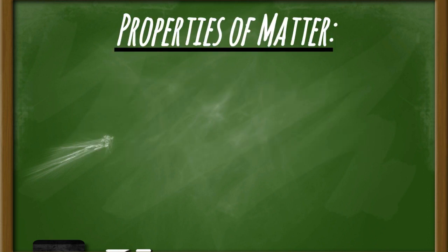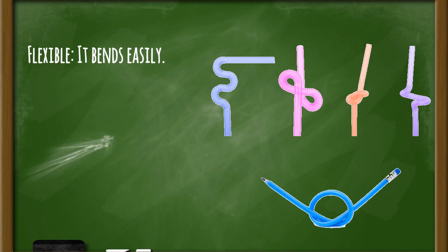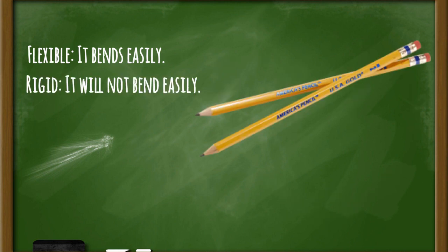When describing different types of natural materials and resources, we want to use properties of matter so we can identify and classify objects into categories. Our first vocabulary word is flexible, which means easy to bend — like bendy straws or a fun pencil you can fold around. The opposite of flexible is rigid, which means an item will not bend easily, like a normal number two pencil.